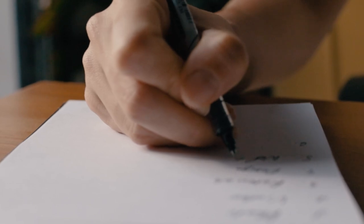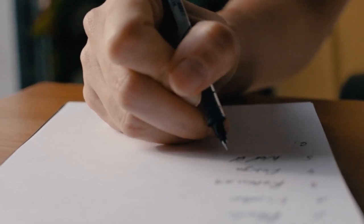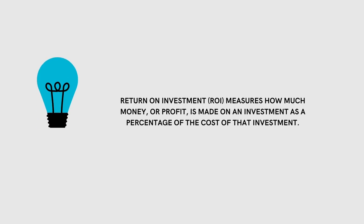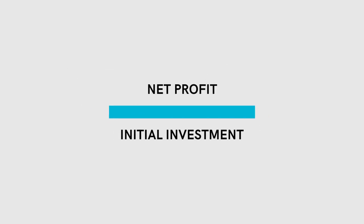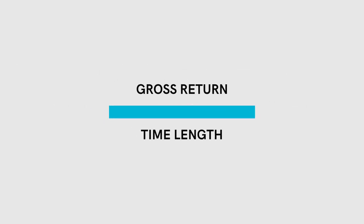Real estate investing uses a number of calculations and indicators to tell us whether or not an investment is viable. There's a long list of calculations you can use, but the reason I like using return on investment is because it allows us to make comparisons with other potential investments and helps us forecast for potential earnings in the future. Return on investment, or ROI, measures how much money or profit is made on an investment as a percentage of the cost of that investment. We take our net profit and divide that by our initial investment, which gives us a percentage — the gross return — which we can then divide by how long we've had that investment to give us our annual rate of return.